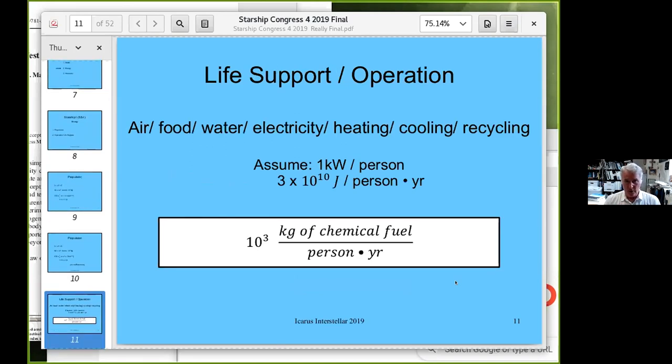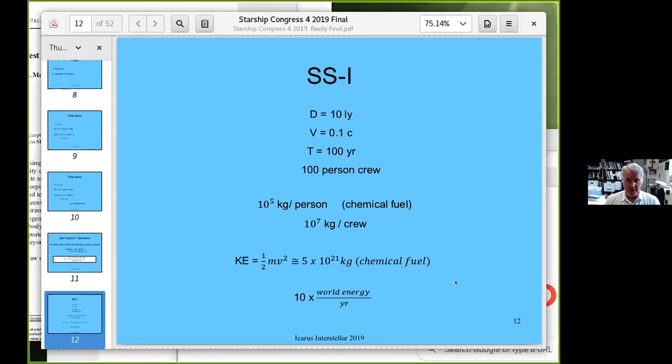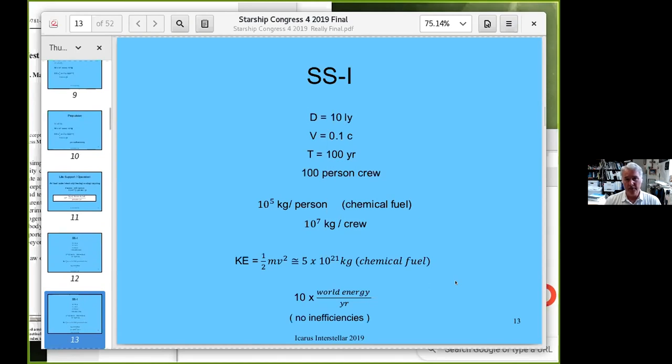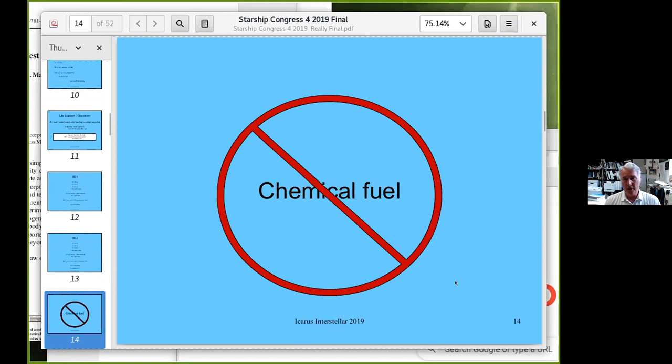Now, life support: air, food, water, electricity, heating, cooling, recycling. Assume one kilowatt per person on a steady basis - that's 3×10^10 joules per person per year, roughly a thousand kilograms of chemical fuel per person per year. For a distance of ten light years at a tenth the speed of light taking a hundred years, for a hundred person crew, that's 10^7 kilograms total. The kinetic energy associated with bringing that up to speed is ten times the world's energy use for a year. So chemical fuels are probably not going to get you where you want to go.